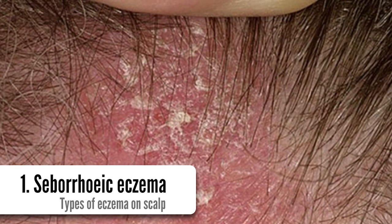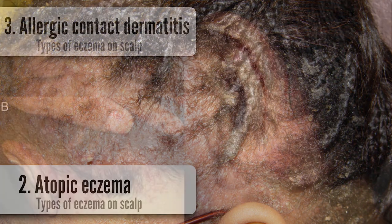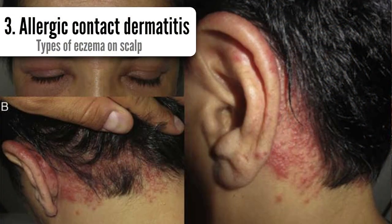Atopic eczema is another common type that can affect the scalp at all ages. The skin is red, dry, and itchy, and can easily become infected — especially if scratched and when there is broken skin. Allergic contact dermatitis can develop as a result of your body reacting to a particular substance to which you are allergic.